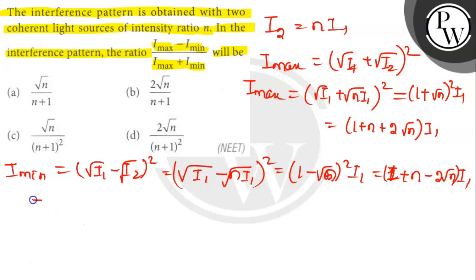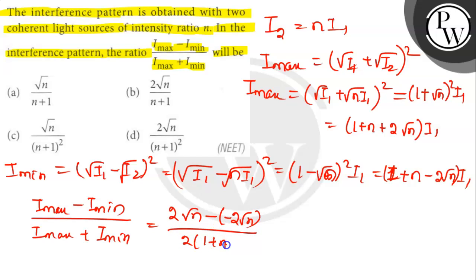So here (I_max - I_min)/(I_max + I_min) will be, we put the values: 2√n minus (-2√n) divided by 2(1 + n). So it will be 2√n/(n + 1).